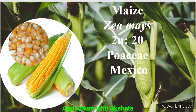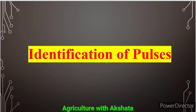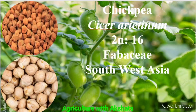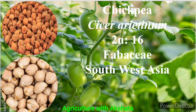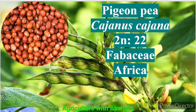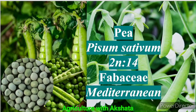Maize: Zea mays, 2n = 20, Poaceae family, origin Mexico. Now let us identify some important pulse crops which belong to the Fabaceae family. Chickpea also called Bengal gram: Cicer arietinum, 2n = 16, Fabaceae family, origin Southwest Asia. Pigeon pea also called Arhar: Cajanus cajan, 2n = 22, Fabaceae family, origin Africa.